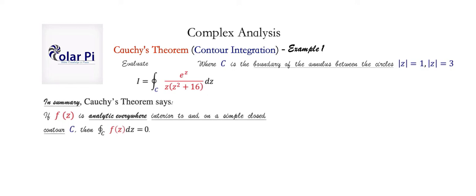Cauchy's theorem says that if F of Z is analytic — meaning differentiable, as analytic is just the word we use to mean differentiable when talking about functions of a complex variable — if F of Z is analytic everywhere interior to and on a simple closed contour C, then the integral over C of F of Z is equal to zero. I show you why this is true — the proof — in example zero, so check that out. But this is a very, very powerful statement.